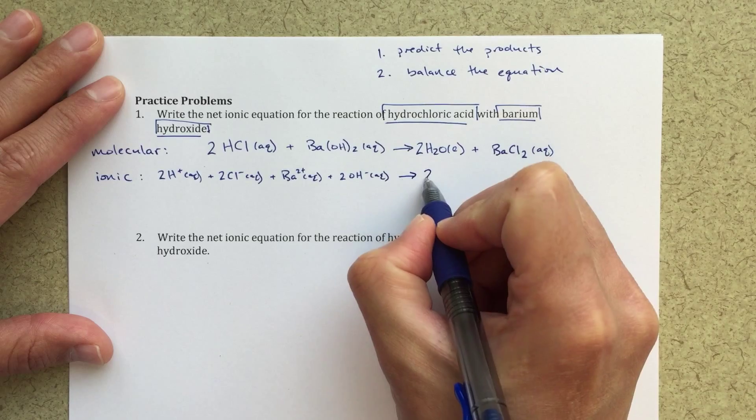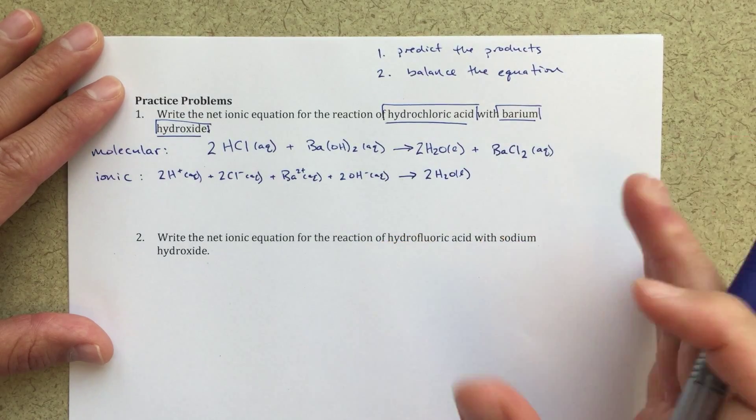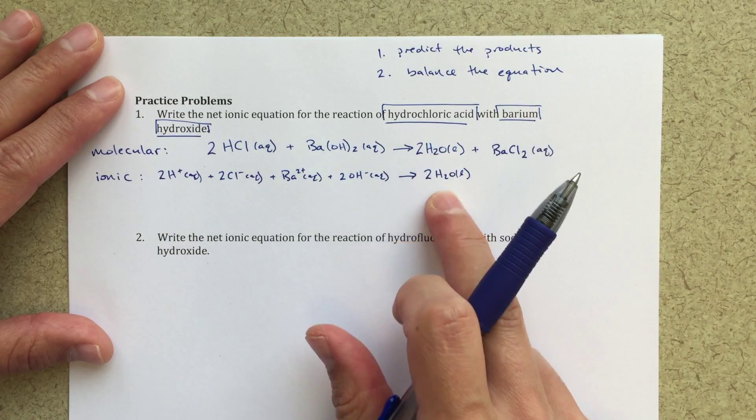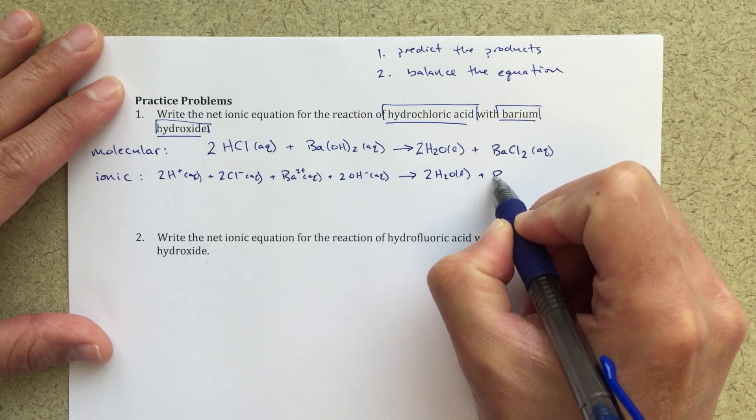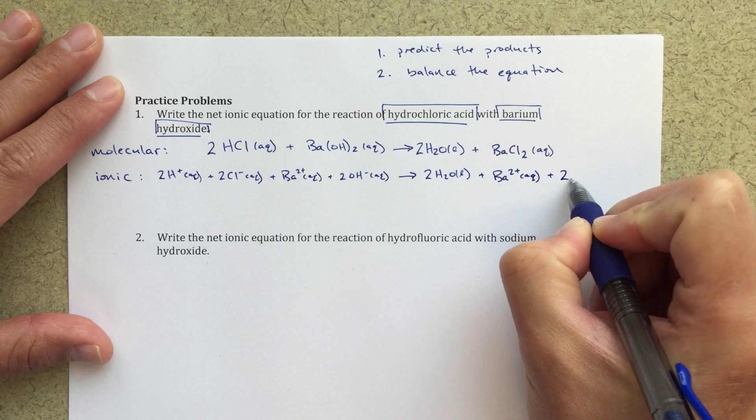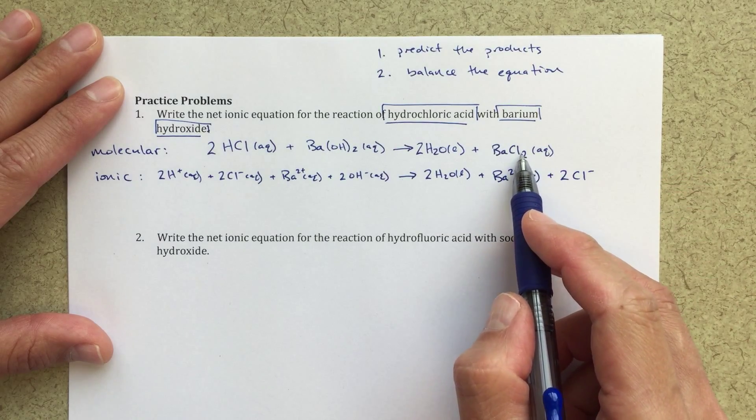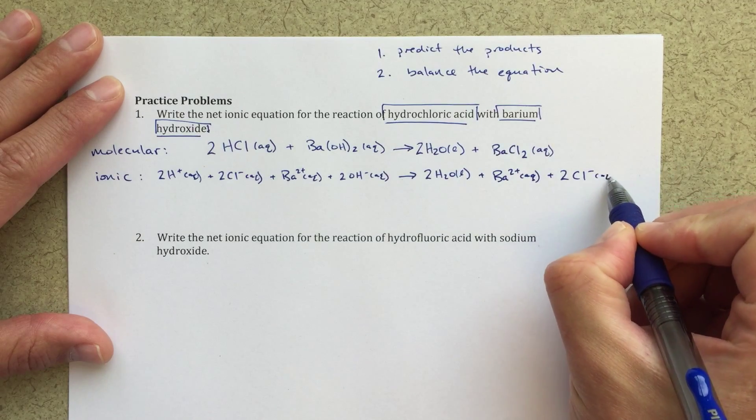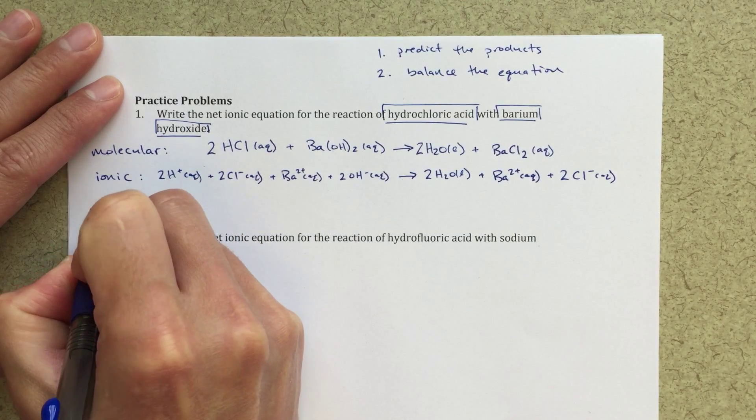That's all going to turn into two H2O liquid. So H2O, it's a liquid, it's not going to ionize. We're not going to turn it into any ions. Plus barium 2+ aqueous plus two Cl-. Even though it's Cl here, that's going to dissociate into ions. I'm going to get two Cl- ions, and that will also be aqueous.